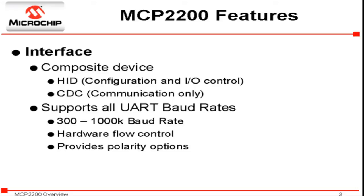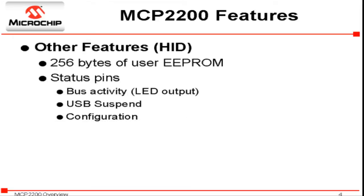The MCP2200 supports all UART baud rates up to 1 megabaud. This device also supports hardware flow control and provides polarity options. Other features include 256 bytes of general purpose user EEPROM.